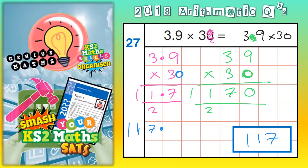So, that's 1170. 39 times 30 is 1170. But, 3.9 times 30,